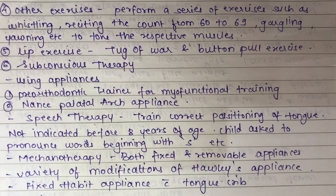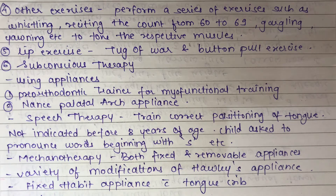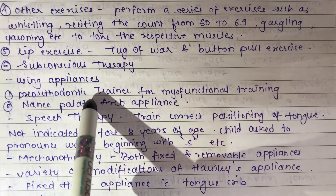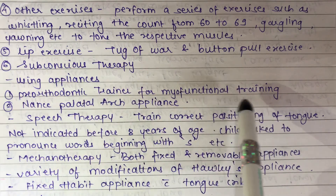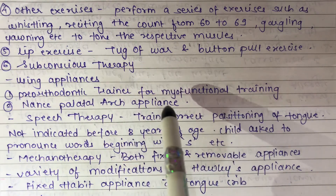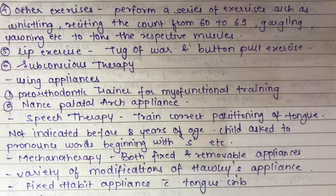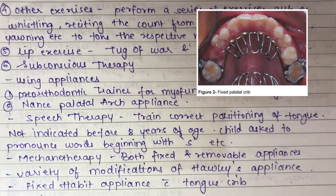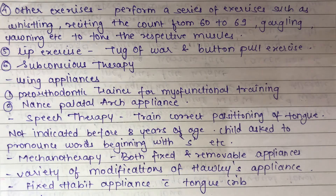Mechanotherapy involves both fixed and removable appliances that re-educate the tongue so that the dorsum approximates the palatal vault and the tip contacts the palatal rugae. Examples include the pre-orthodontic trainer for myofunctional training, Nance palatal arch appliances, tongue cribs, oral screens, and modifications of Hawley's appliances.